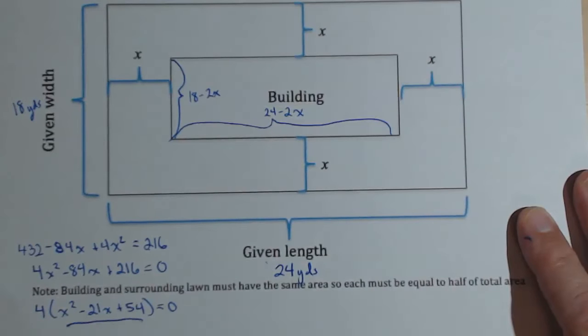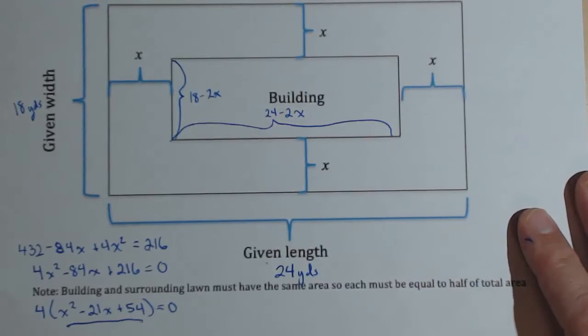For time's sake, I'm going to give you the answers. Because we've had other practice doing the quadratic formula, you get two answers. You get X equals 3 and X equals 18.